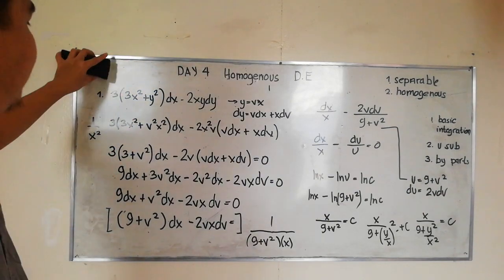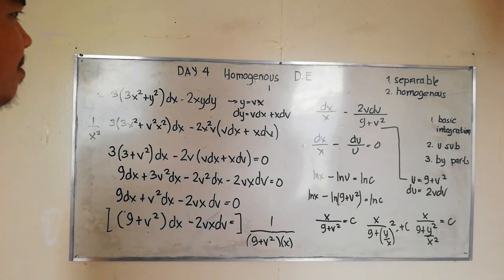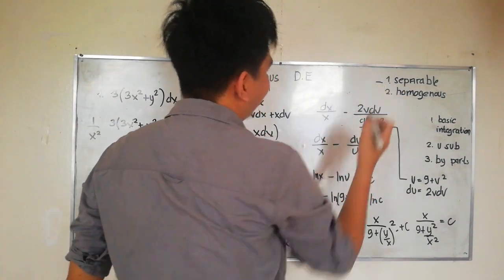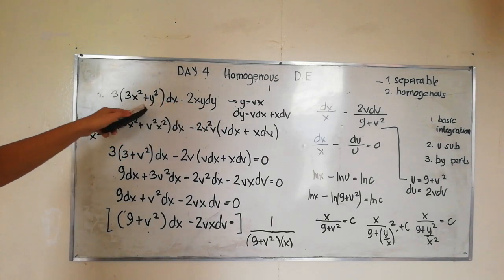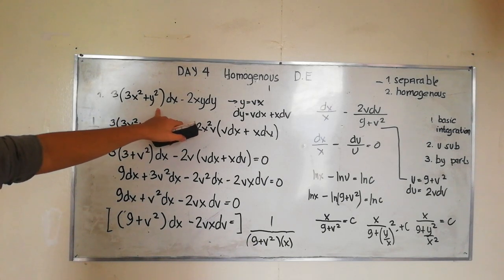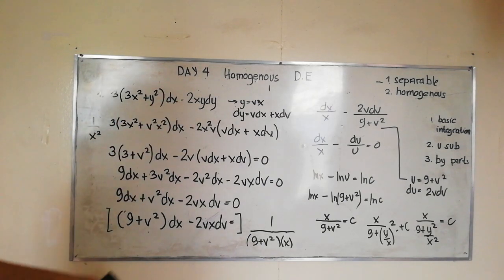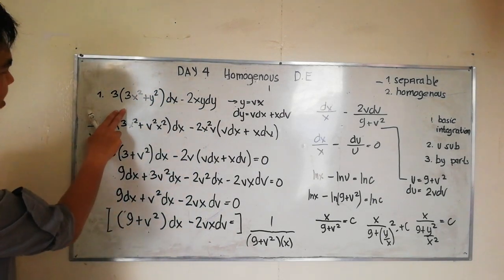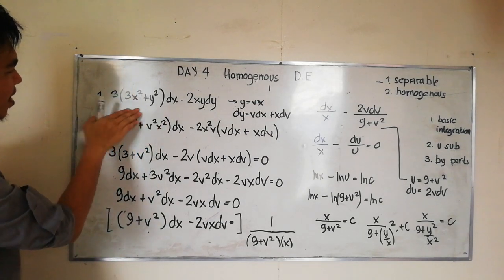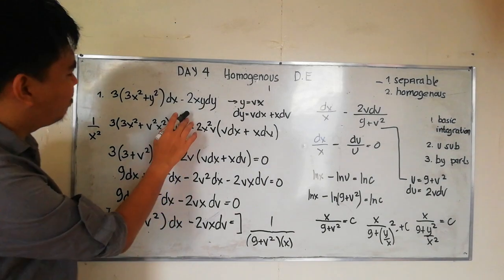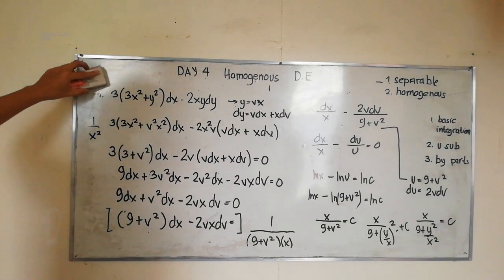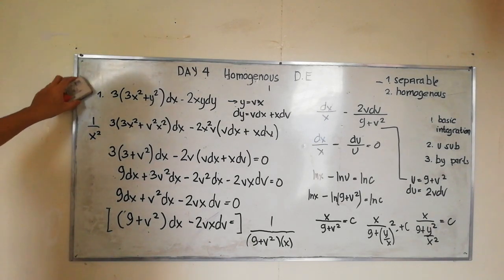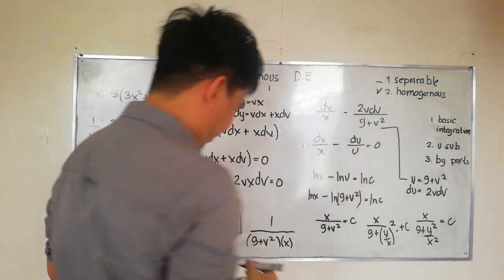In our previous discussion on day three, we solved by variable separable. Let's find out if we can solve this by variable separable. The dx term is a function of x and y, so we cannot group all the values of x with dx, and we cannot group the values of y with dy. So this problem can only be solved by homogeneous — it's not separable.